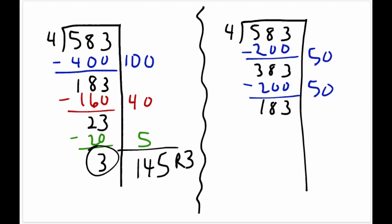And just to belabor the point a little bit, we could say 30. So 4 goes into 183 30 times. So that's 120.